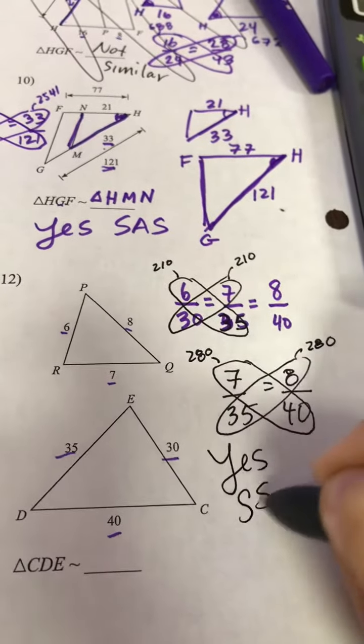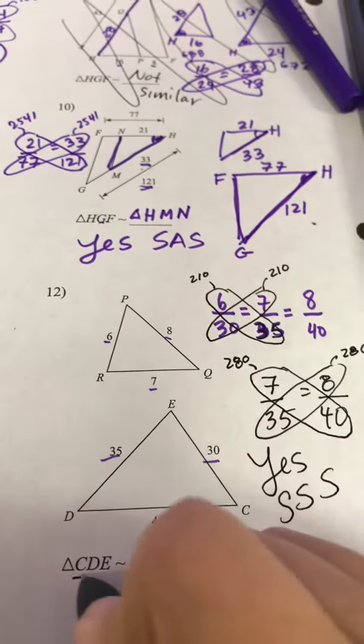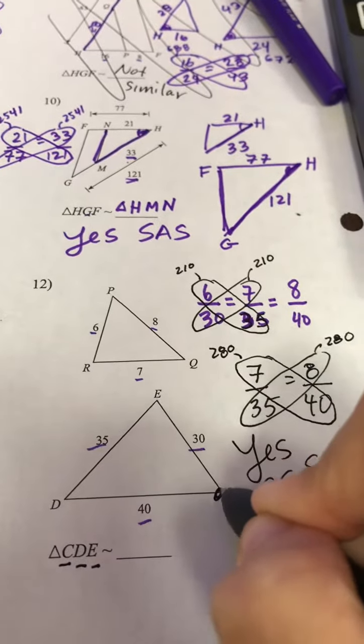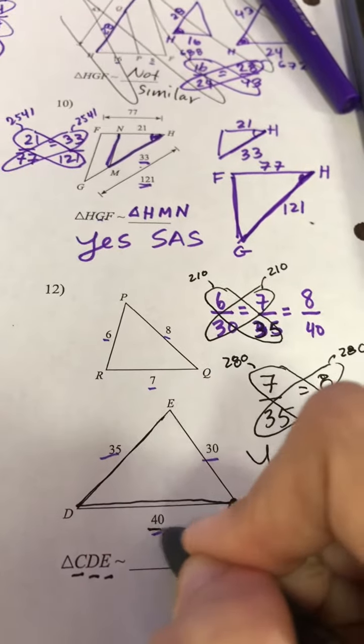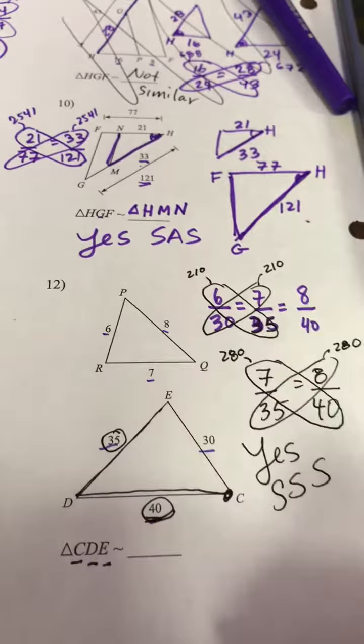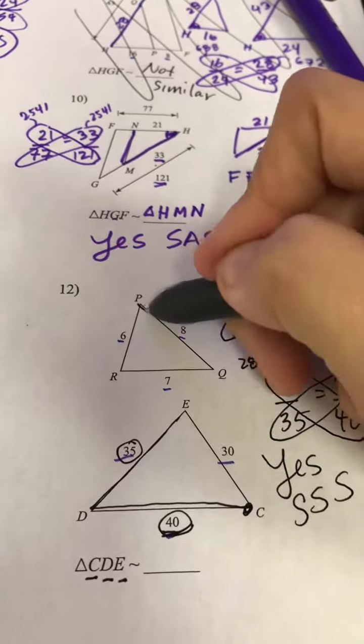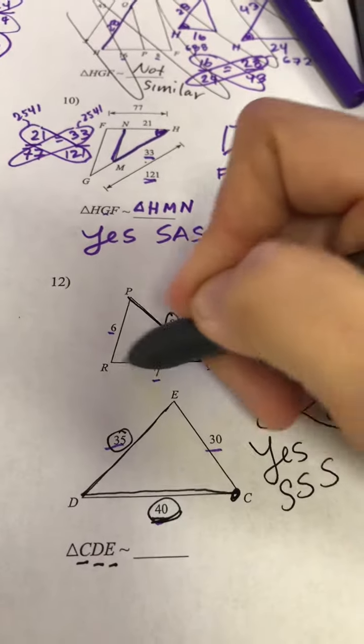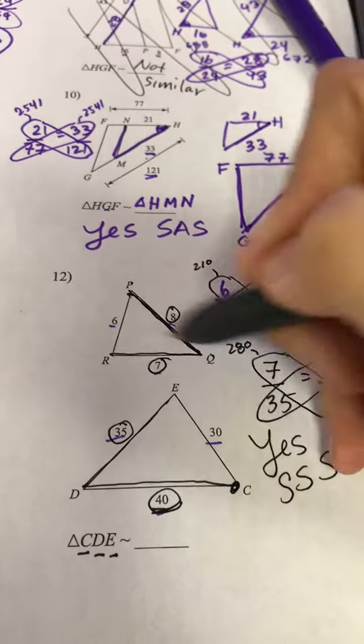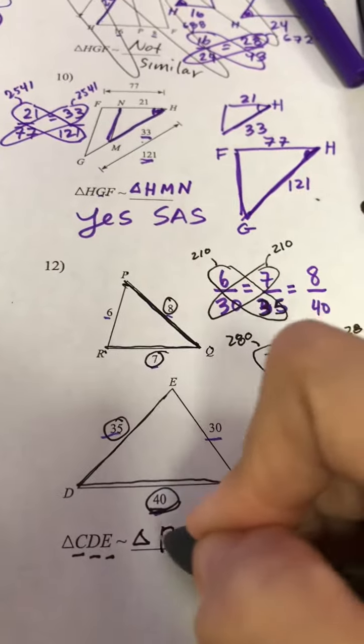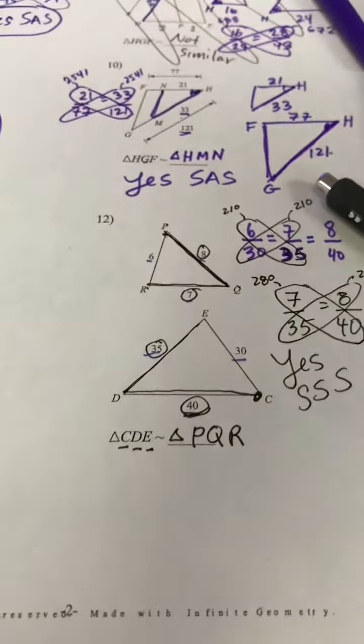So this is going to be yes because of side, side, side similarity. Now let's name them. So C, D, E. C, D, E. They went across the big side and then the middle side. So I want to do the same thing. I want to go across the big side, 8, and the middle side, 7. So I have to call this P, Q, R. Thanks so much for joining us. Enjoy your weekend.